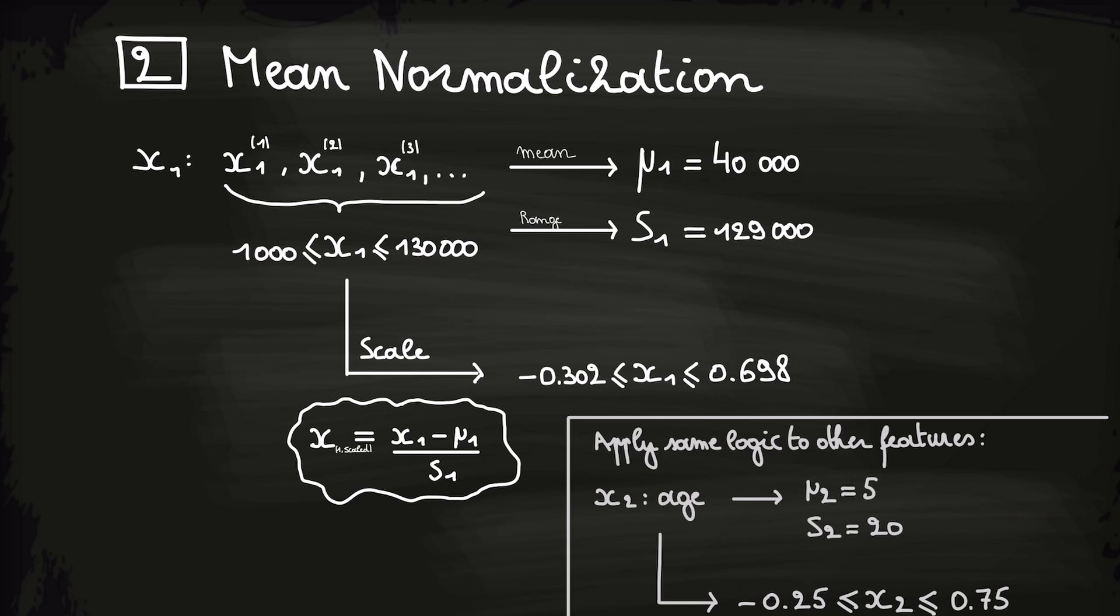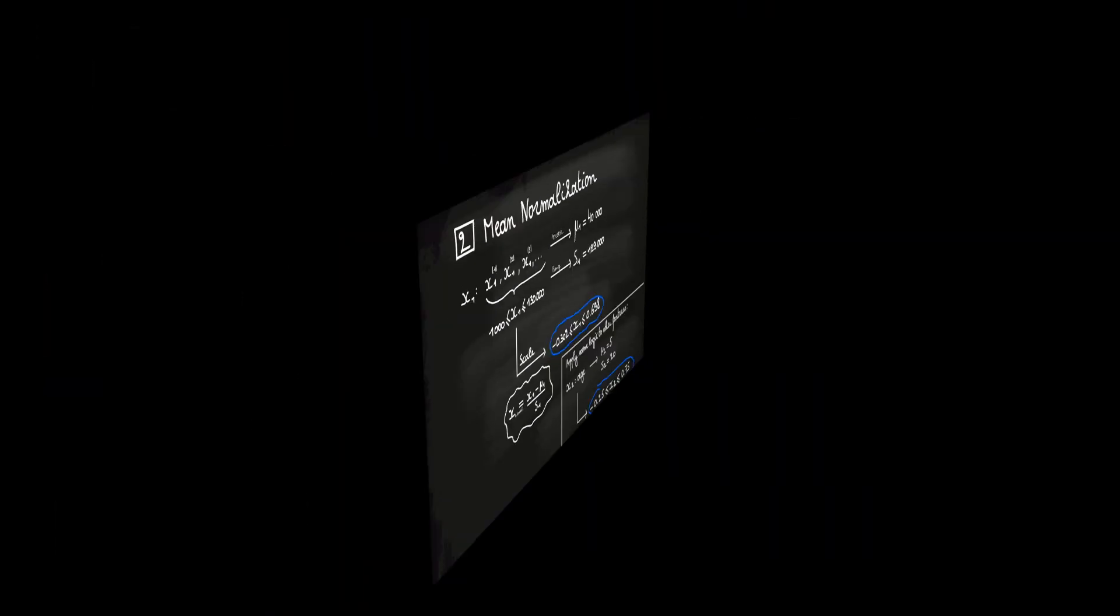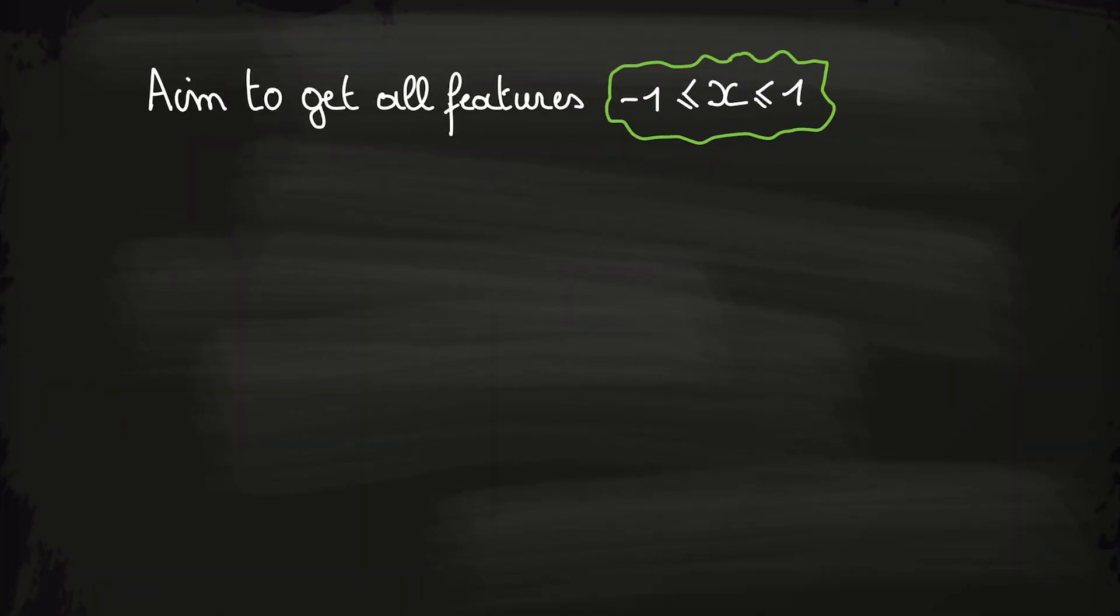For example, we can do the same for the age of the car. You might notice that the ranges of the features are not exactly the same. That's true, but this is no problem. As long as the ranges are not too far from each other, you still obtain a fast gradient descent algorithm. You should aim to get our features between minus 1 and 1. However, this isn't a strict rule.